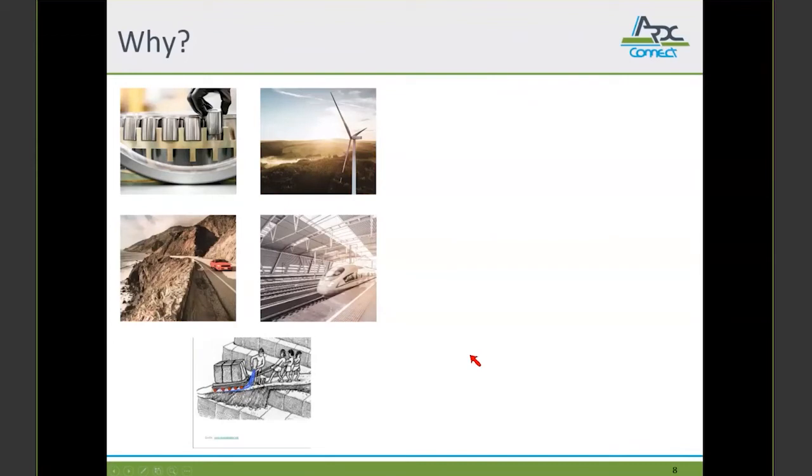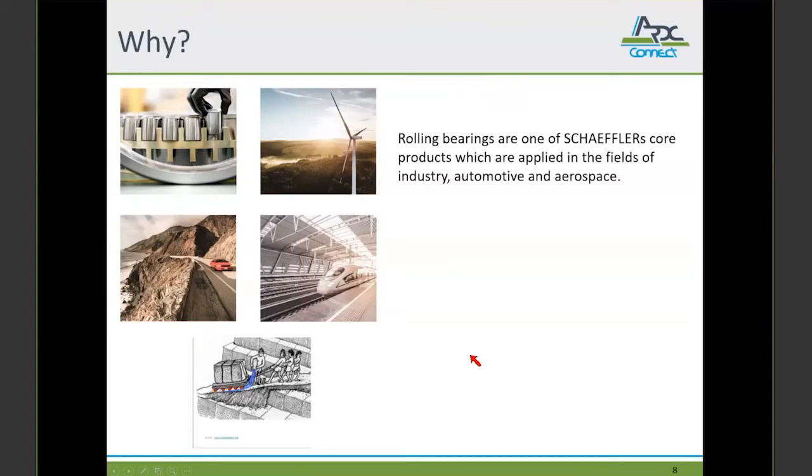Let me start with the motivation of developing and applying this method. Scheffler has a very wide variety of products. One of the core products are rolling bearings, which are applied in several fields, like industry, automotive, and aerospace. The picture on the top left shows a manual assembly of a spherical roller bearing. This is a typical industrial product with typical applications: gearboxes, railway applications, and wind turbines.